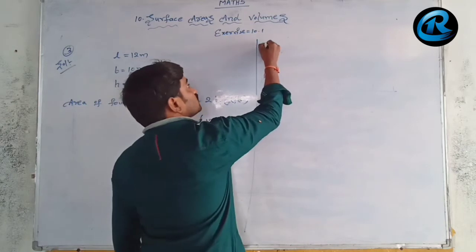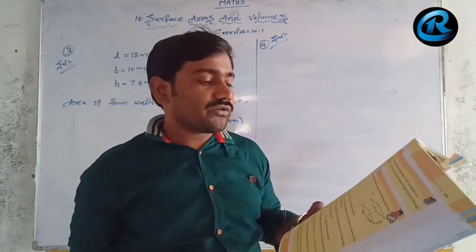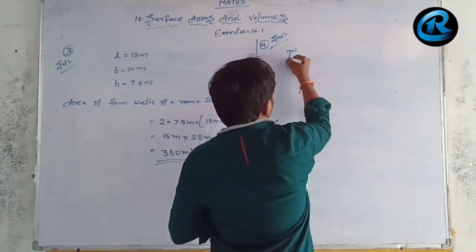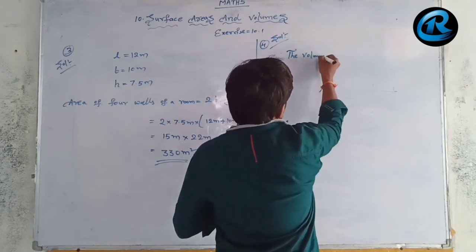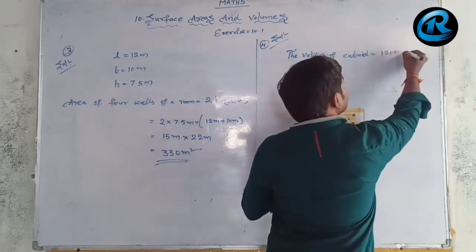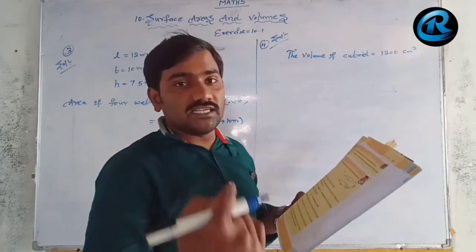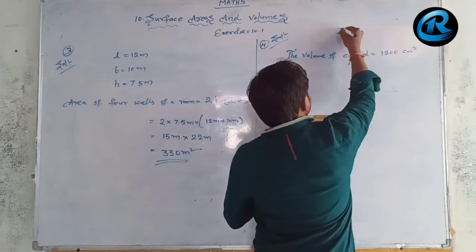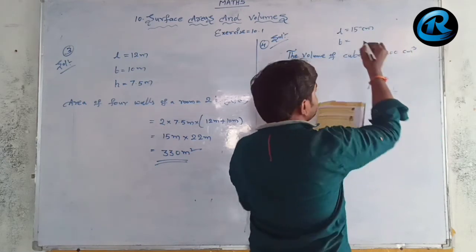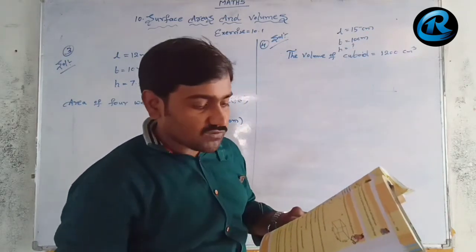Now for the fourth question. The volume of a cuboid is given as 1200 cm³. Length is given as 15 cm and breadth is given as 10 cm. We need to find the height.